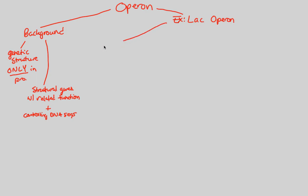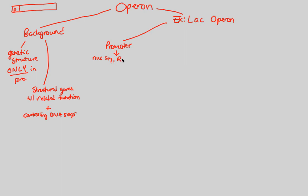One controlling DNA sequence is the promoter region. Think of a chromosome with certain regions — one part of the operon will be a promoter. The promoter region is a nucleotide sequence — A, T, C, and G — and it's a place at which RNA polymerase will bind.